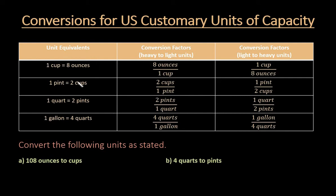So the ones that we're going to be looking at is: one cup is eight ounces, one pint is two cups, one quart is two pints, and one gallon equals four quarts.